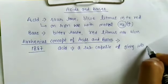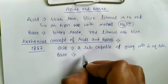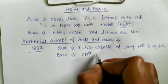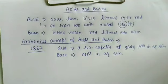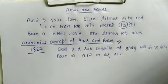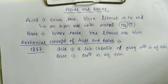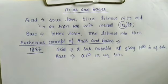An Arrhenius acid is a substance capable of giving protons (H⁺) in aqueous solution. Similarly, Arrhenius said that a base is a substance which is capable of giving hydroxide ions (OH⁻) when dissolved in water. The main point of the Arrhenius concept is that an acid must contain hydrogen, and a base must contain a hydroxyl group.